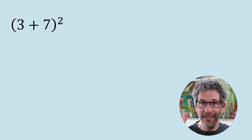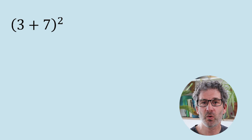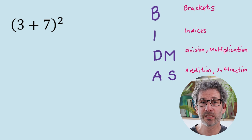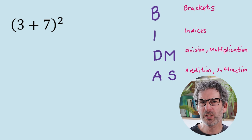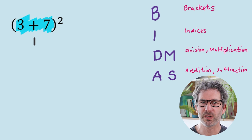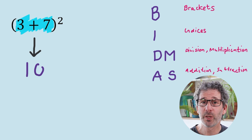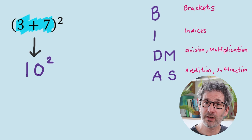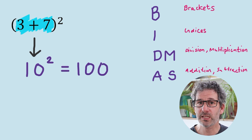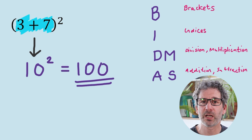Next example: 3 add 7, and then in brackets that whole thing is squared. We do have brackets, so we evaluate that first — we carry out the calculation inside those brackets first. That's 3 add 7, which is 10. So the calculation becomes 10 squared — in other words, 10 times 10, which is 100.